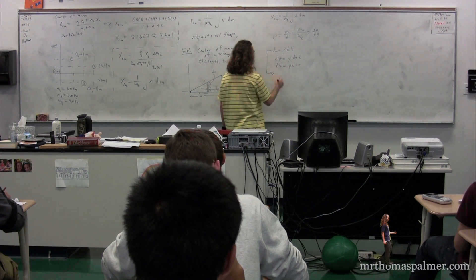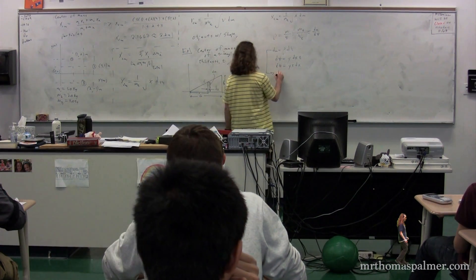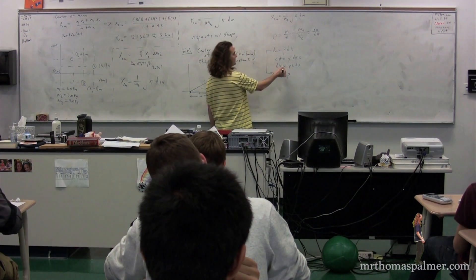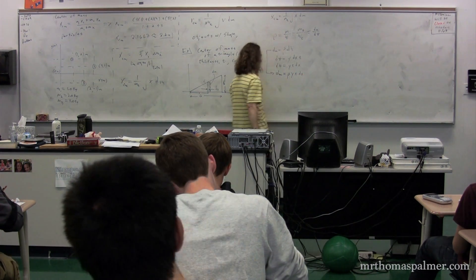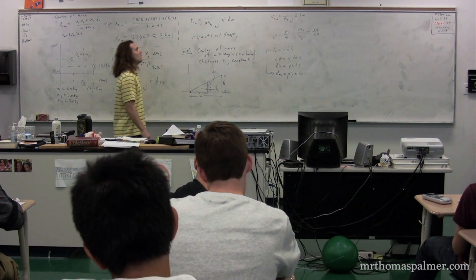So I can rearrange dm. dm, then, is equal to the density multiplied by dv, which is y times t times dx.